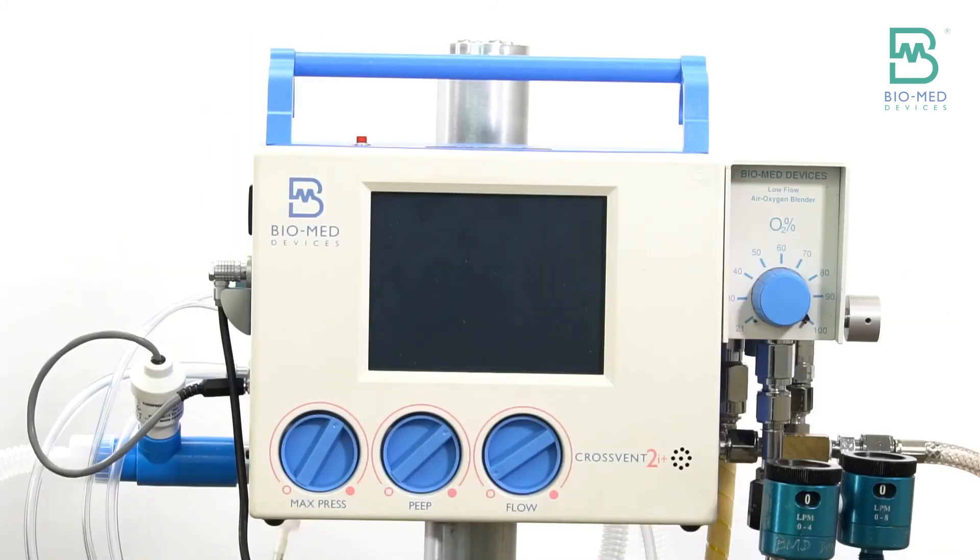The other thing too is the CrossVent is actually more gas efficient. The old MVP-10 is a pneumatically powered vent and uses gas to run itself. So it actually consumes a lot more gas.